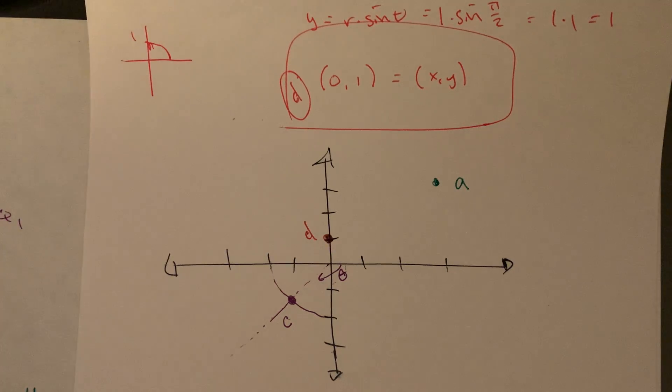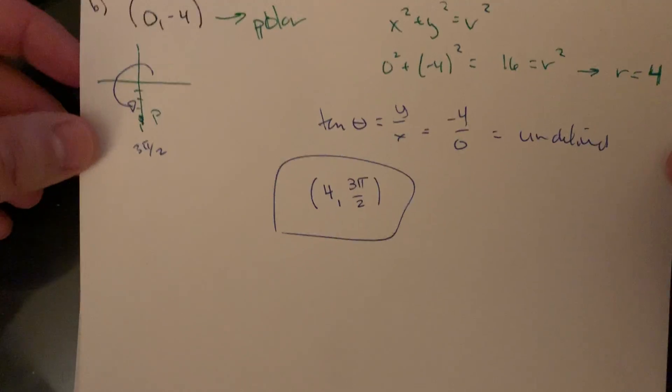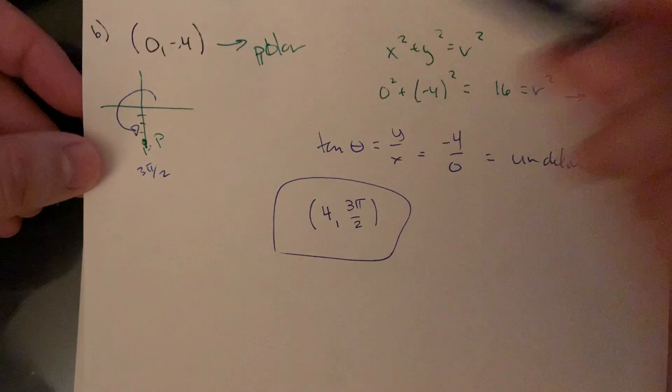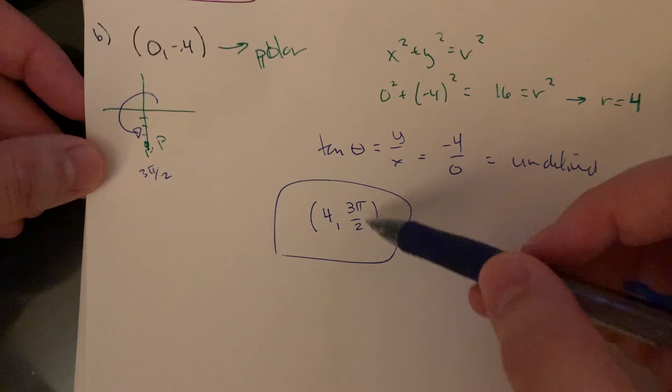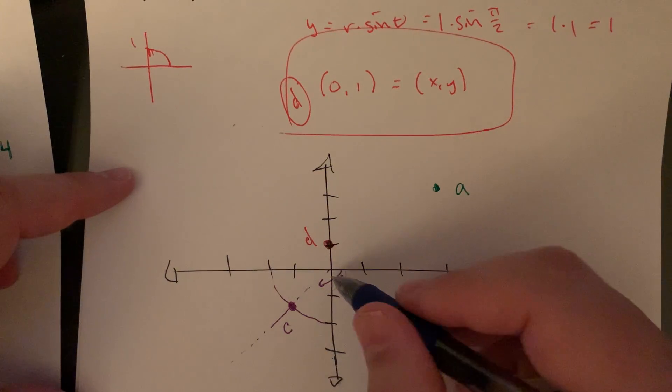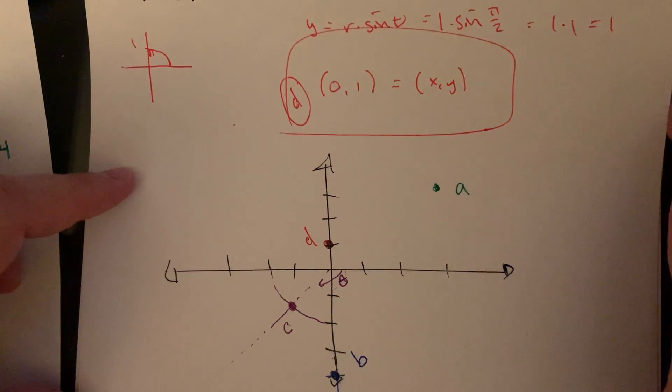And then last but not least, point B. This one we could really do either way. So this was (0, negative 4). We kind of have this half sketch already. Or radius 4 and the angle is 3 pi over 2. So that's 3 pi over 2 or 0, and then down 4. Of course, I didn't quite make this long enough. So that point B is going to be there.